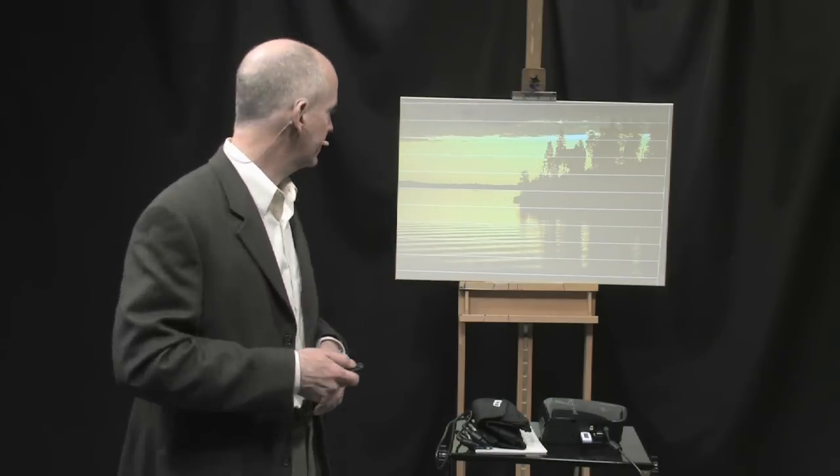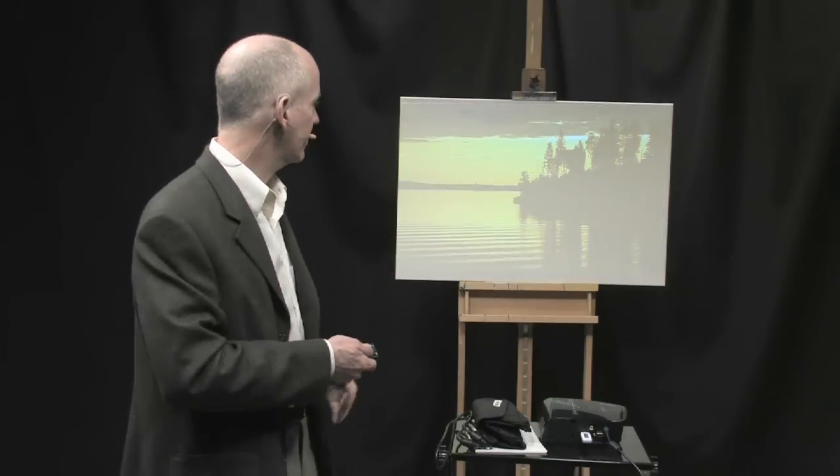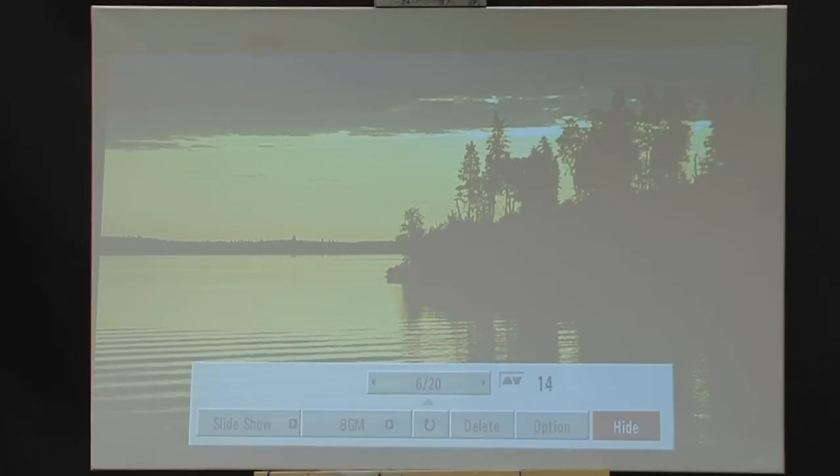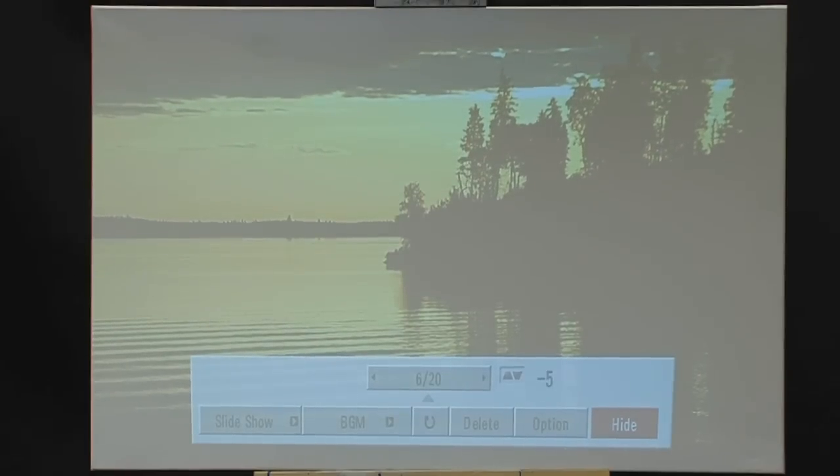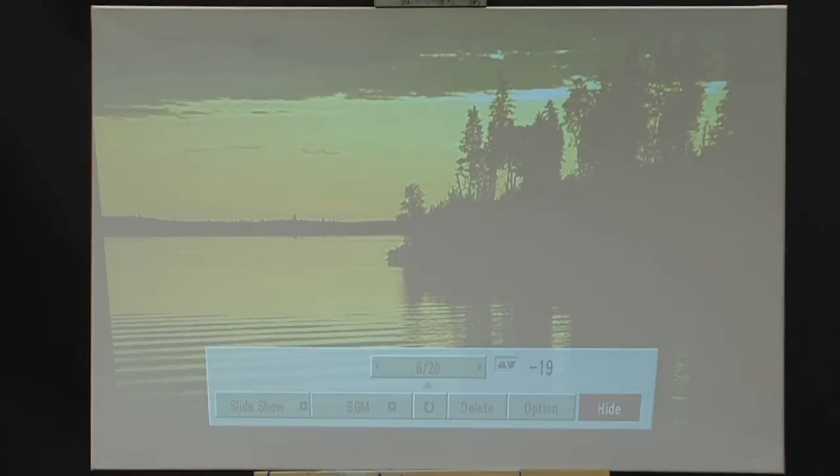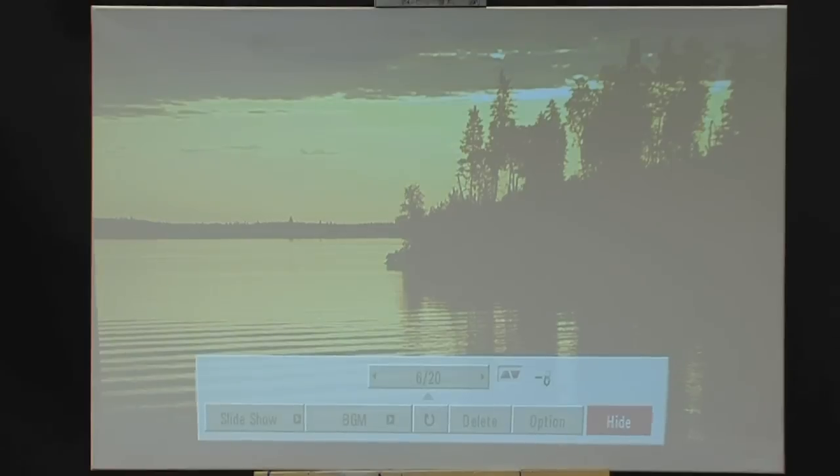Another feature that this projector has is the ability to adjust the keystoning. And that means to keep the picture at a perfect 90 degree. And this is useful if you have to project, say, up. If the source that you're showing your projector, the canvas is up higher than your projector, you can move the keystoning to again make sure you have a nice square true image. You can tilt it forward or backward doing the keystone adjustment.